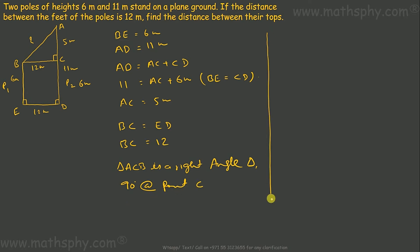AB² will be equal to AC² plus BC². AC is 5, 5 squared. BC is 12, 12 squared. So 25 plus 144, which is 169.